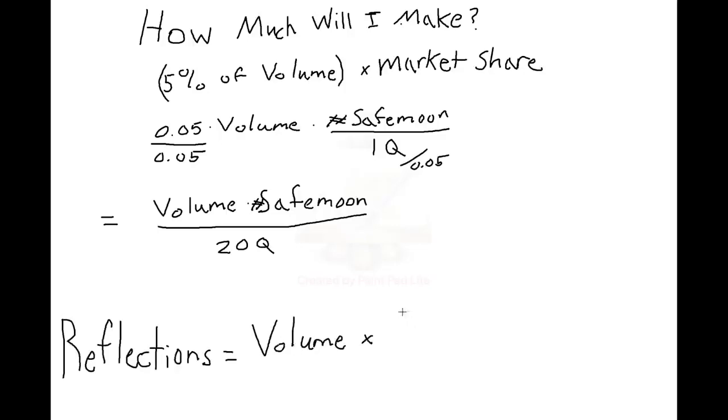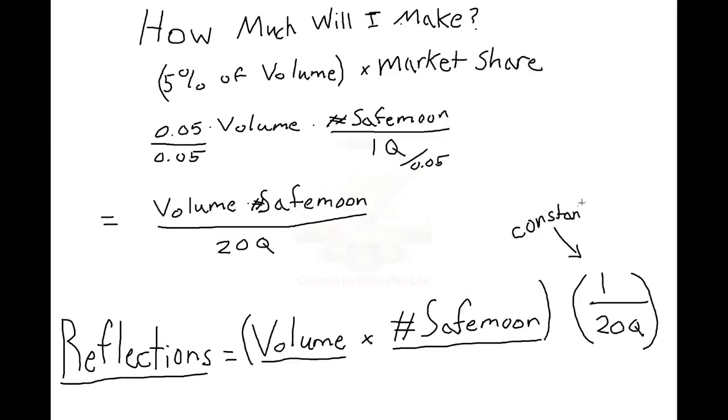By rewriting the denominator, we can see that reflections is nothing more than volume times SafeMoon, multiplied by a constant, 1 over 20 quadrillion. That part doesn't change. But what's beautiful about this is it tells us exactly what we need to know. It shows the direct linear relationship between reflections, volume, and SafeMoon. If either volume or your SafeMoon bag increases, reflections do too, linearly.